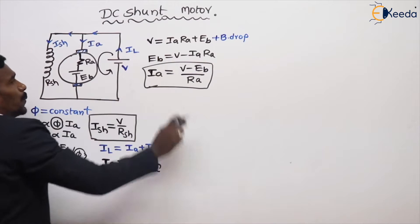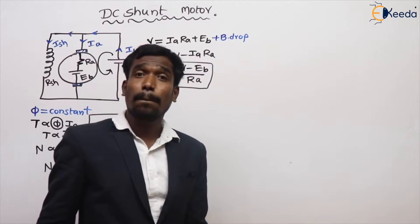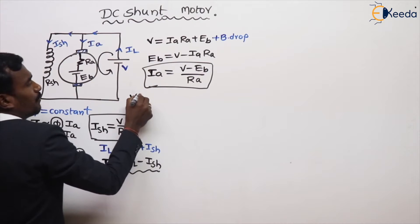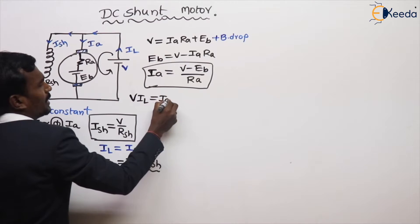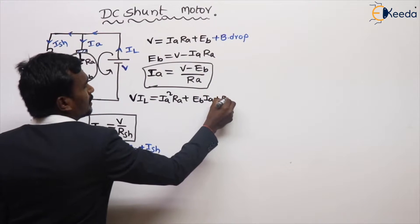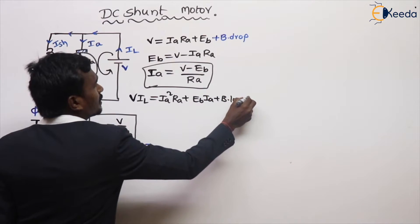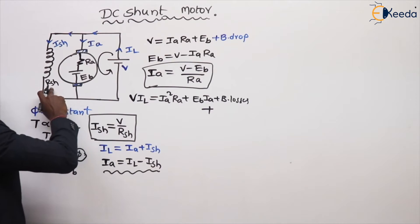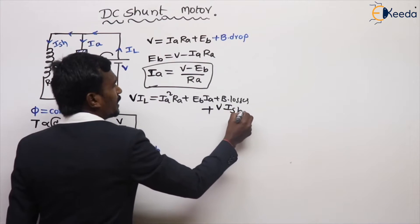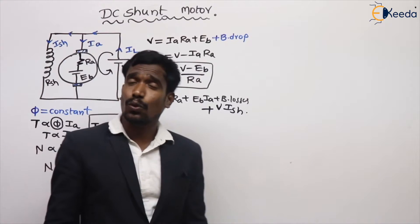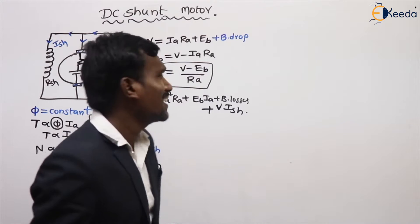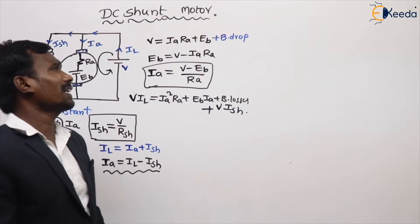For the power equation, we multiply by current: V·IL equals IA²·RA plus EB·IA plus brush losses. We also include the shunt field copper loss, written as ISH²·RSH. This is the complete power equation for the DC shunt motor.